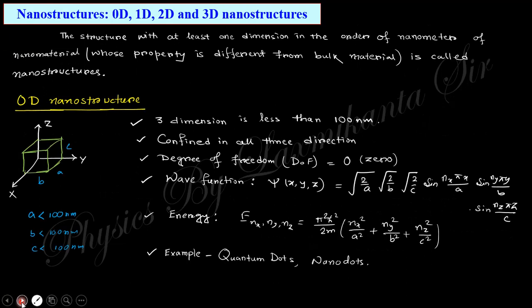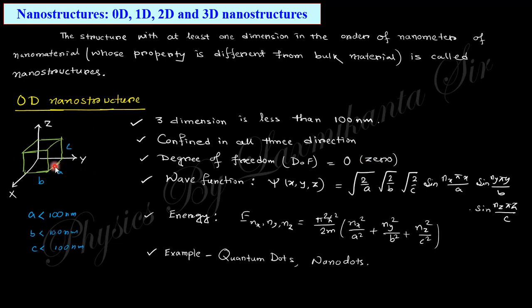The structure is known as a nanostructure. There are four types: zero-dimensional, one-dimensional, two-dimensional, and three-dimensional. For zero-dimensional, the material is confined along all three directions — the size in all three dimensions is in the nanometer order, less than 100 nm. Since it is confined in all three directions, the degree of freedom is zero; the electron cannot move freely along any path. The wave function is like a 3D potential well solution, and the energy values correspond to that. Examples: quantum dot, nano dot.